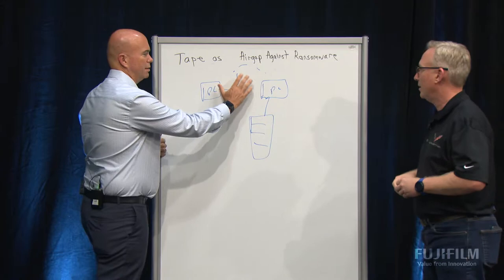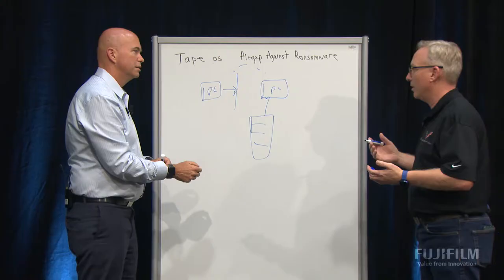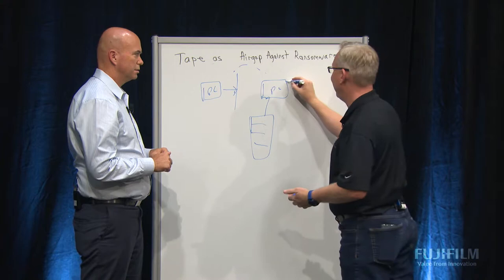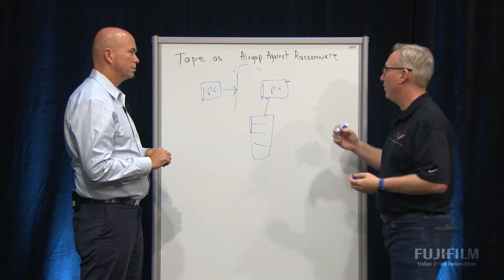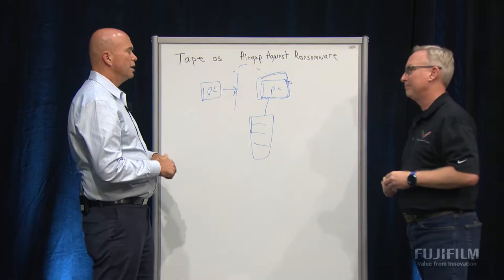So that means if I get a ransomware attack hit in this system and maybe even that system, it can't get to my tape library? Right. It's not the way it's going to cross the network. And there are air gap attacks out there — we can look back at some APTs like Stuxnet, which was an air gap attack carried by a USB drive that was plugged in. That would be bad news. So that's where policies have to be in place to make sure this is very, very isolated. No one's allowed to put USB drives in and stuff like that, so you can't cross that air gap.